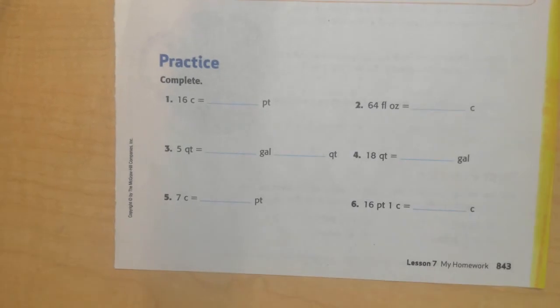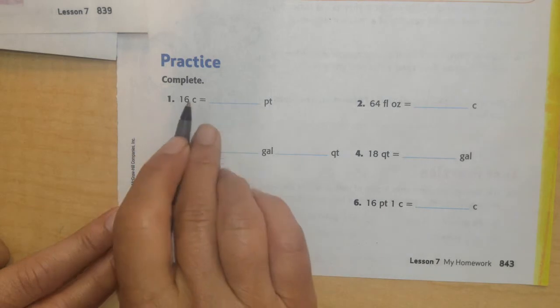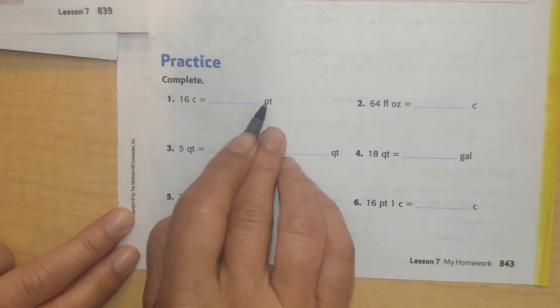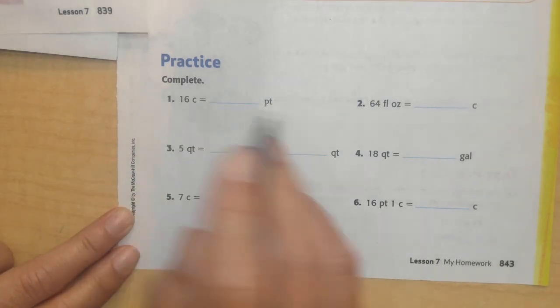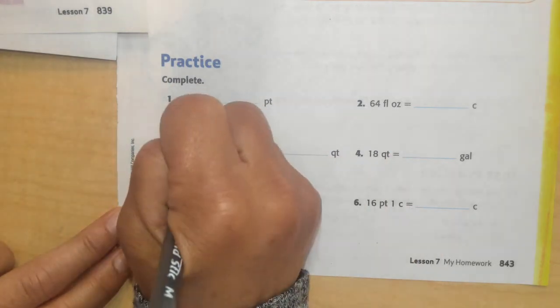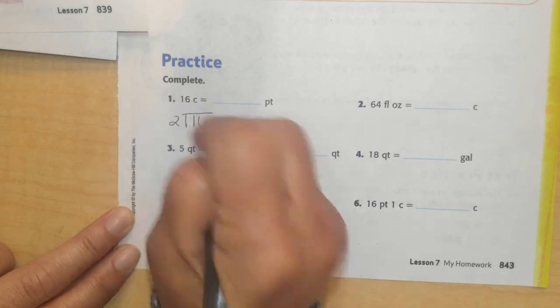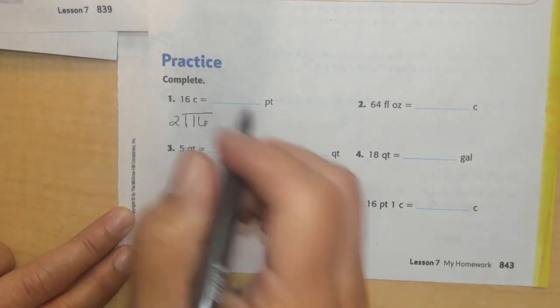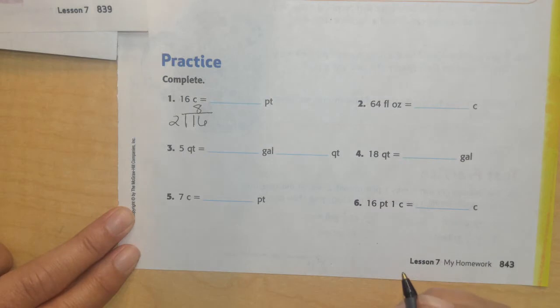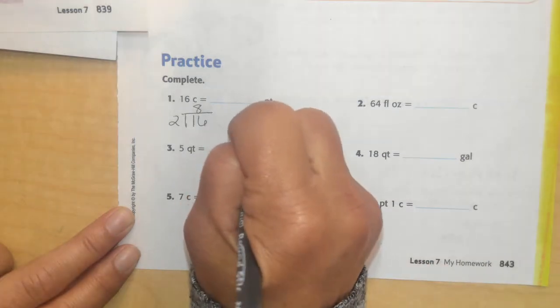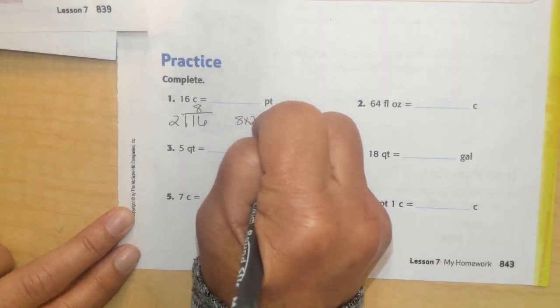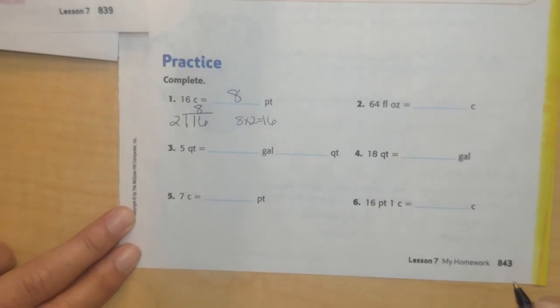So I have 16 cups. I want to figure out how many pints that is. So I know there are two cups in each pint, right? If I go from small to big, I divide. I'm going to do 16 cups. I'm going to divide it by 2. So there's two cups in each pint, and 16 divided by 2 is 8. 8 times 2 equals 16. So I know I'm going to have 8 pints.